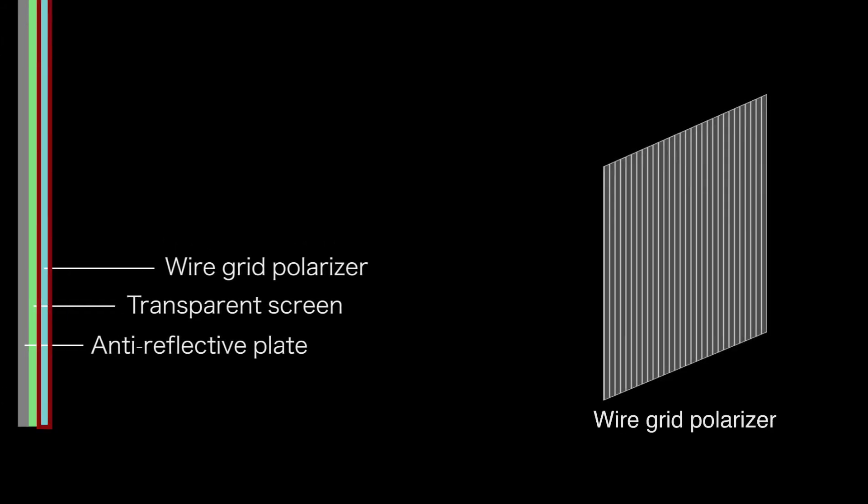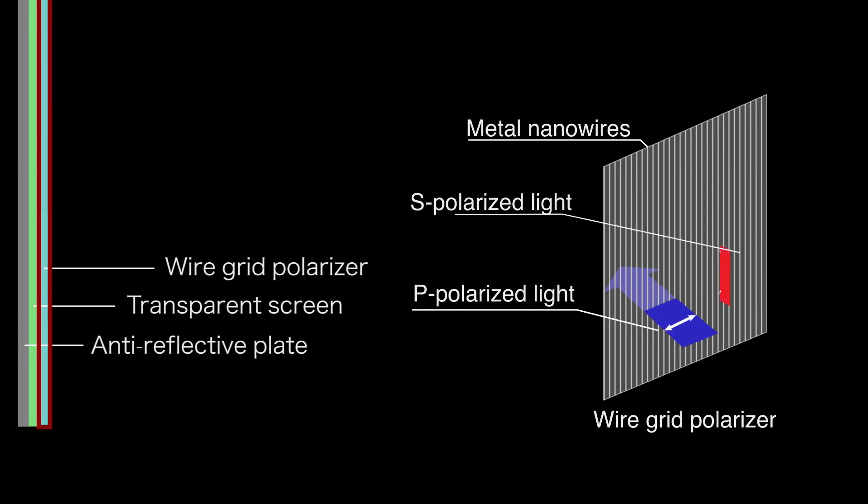The wire grid polarizer is a beam-splitting polarizer consisting of many fine metal wires placed in a plane. It transmits light polarized in a direction orthogonal to metal nanowires, but it reflects lights polarized in the direction aligned with them.